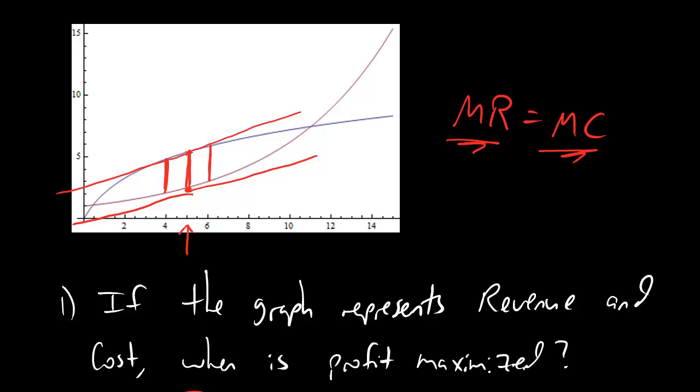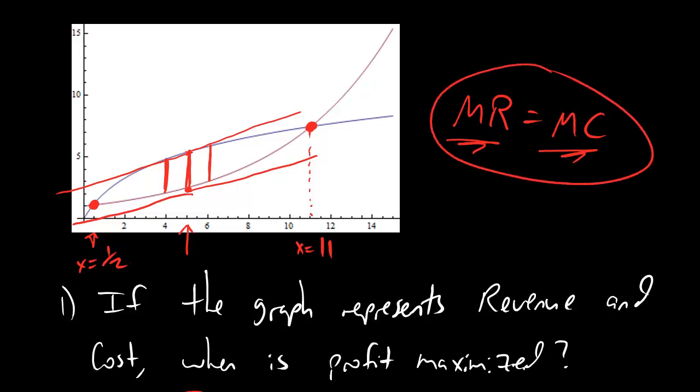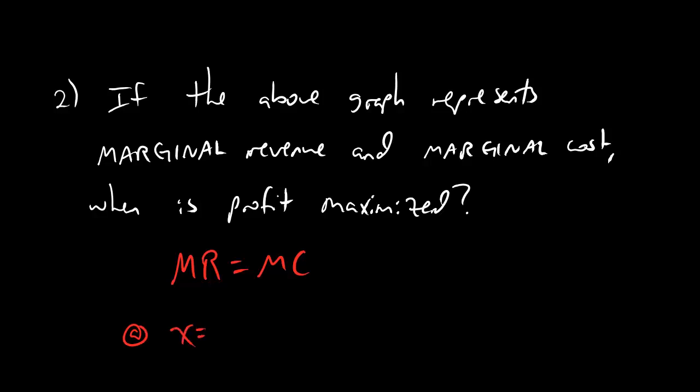We're just finding the point where the two graphs overlap, yo. And so, for number two, our answers are either going to be 1 half, which is this point right here. Or it's going to be 11, which is this point right here. So, that's x equals 11, and this is x equals 1 half. Those are the two points where the graphs cross. And so, if these graphs mean marginal revenue and marginal cost, that's the two points where marginal revenue equals marginal cost. So, we would say profit is maximized at x equals 1 half or x equals 11. No big deal, dudes. So, you've just got to keep in mind what the graphs mean and then use the marginal revenue equals marginal cost equation and go from there.